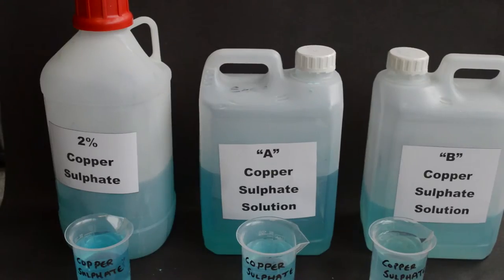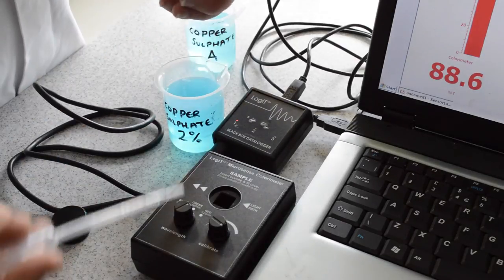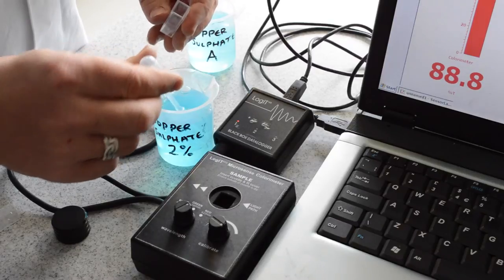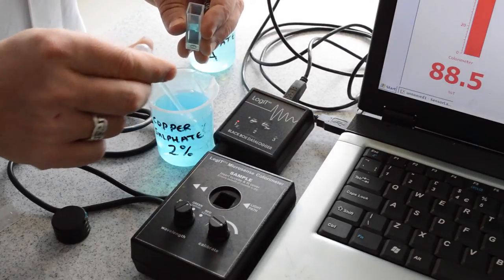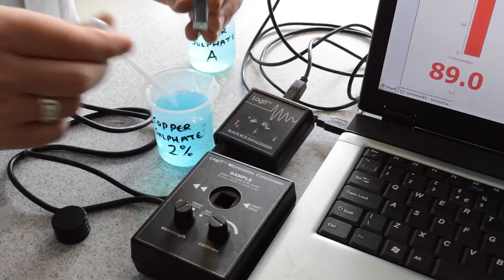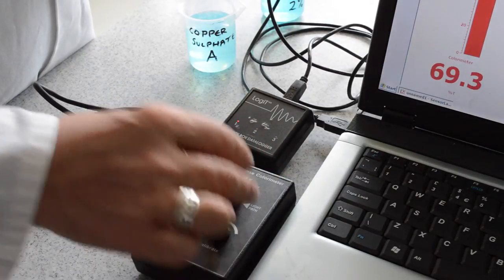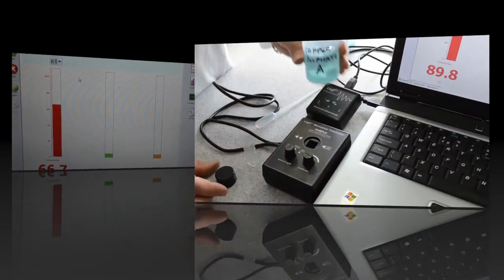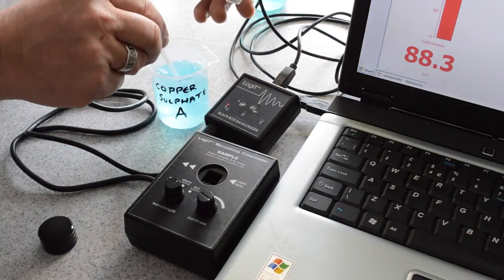In the lab there will be provided copper sulfate solutions at two percent, and a sample of copper sulfate and a B sample of copper sulfate which are unknowns. Place the standard solution of two percent copper sulfate into a cuvette, then place the cuvette into the colorimeter and top with the cap. Notice the value on screen for the known solution. Repeat the process using sample A and sample B to determine their values.